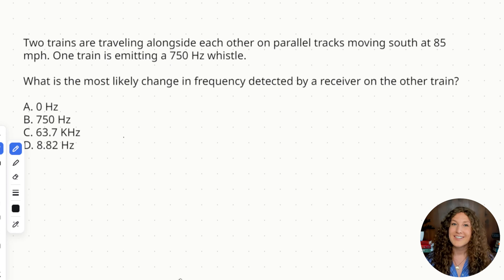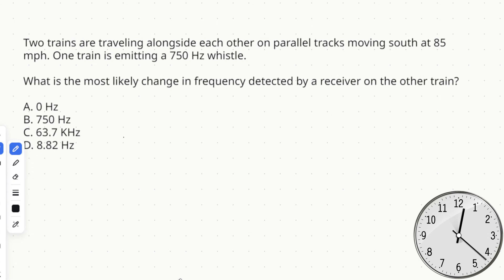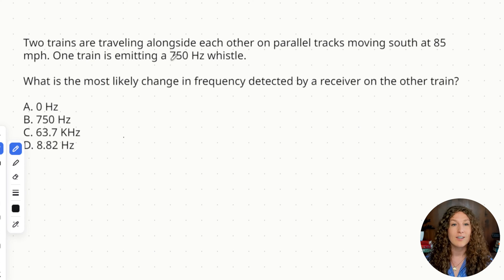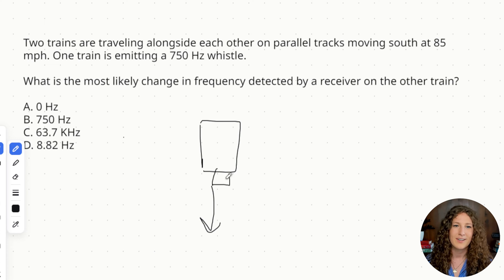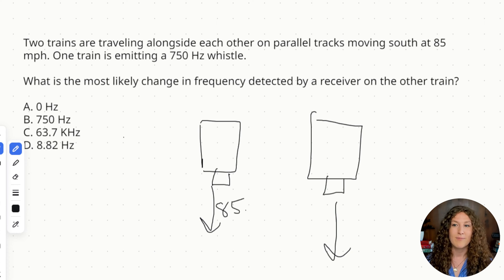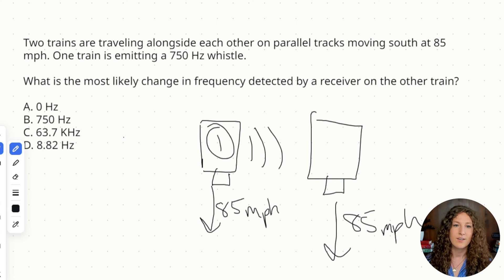Let's do another example with trains. Two trains are traveling alongside each other on parallel tracks moving south at 85 miles per hour. One train is emitting a 750 hertz whistle. What is the most likely change in frequency detected by a receiver on the other train? Let's sketch this out: here's train one and train two, both moving south at 85 miles per hour. Train one is our source, train two is our receiver.